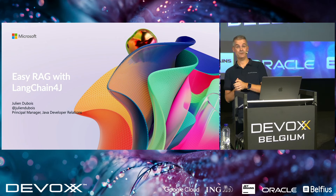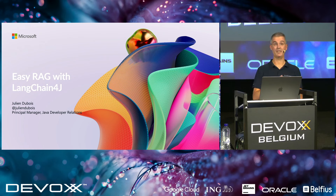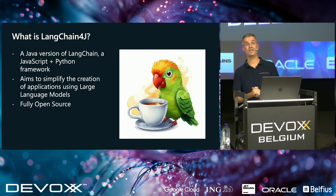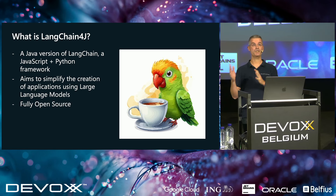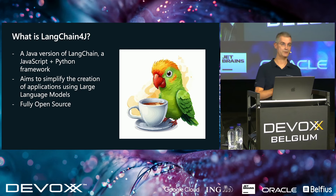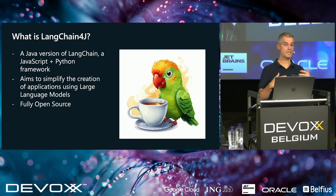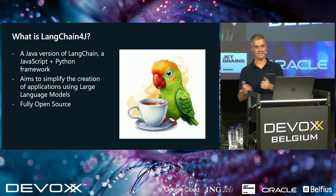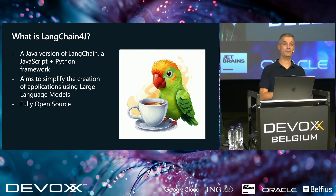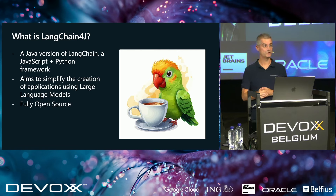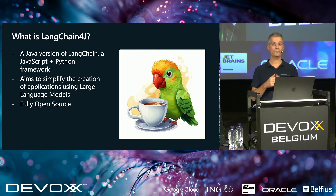I'm Julien Dubois. I will be your speaker today for this talk about LangChain4J and doing RAG with LangChain4J. LangChain4J is a Java tool — the Java version of a very famous framework in Python and JavaScript called LangChain, so LangChain for Java. It aims to simplify the usage of AI models in Java. It's fully open source, done by a community of numerous people including myself. It's very active. If you are interested or want to help, please join us — it's all free and open source.